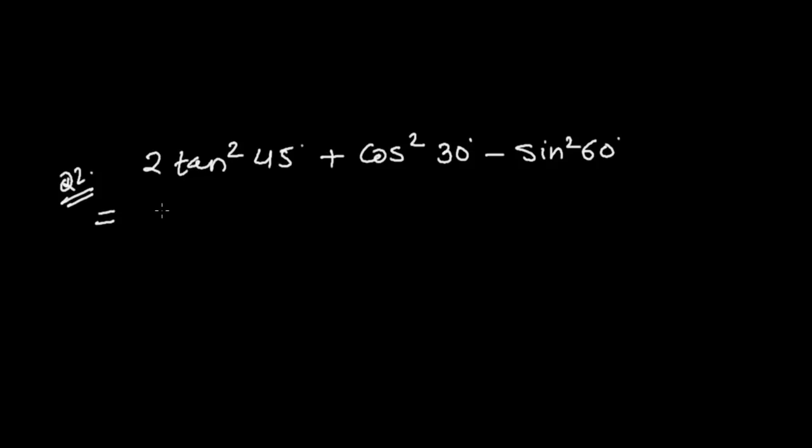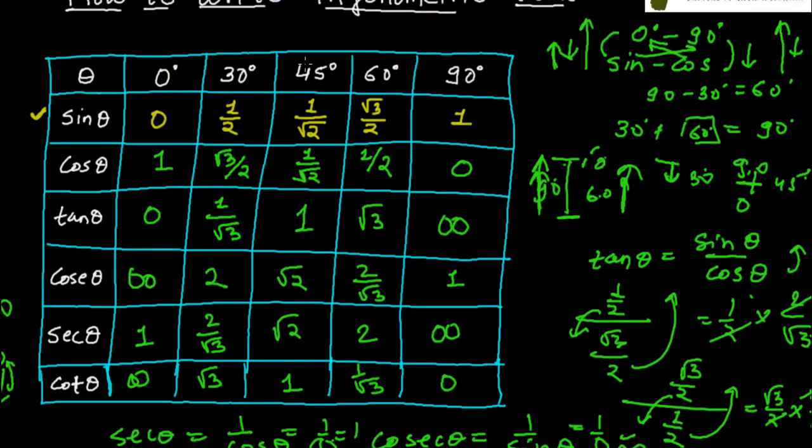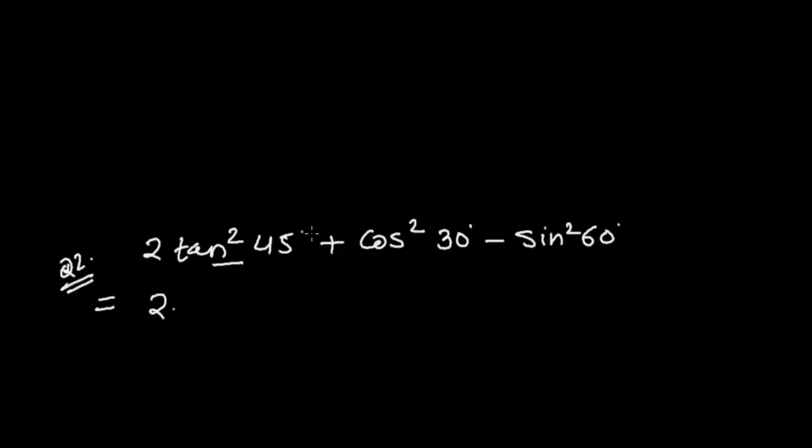So let me first write 2 times tan square 45. So let me find out the value of tan square 45. From this table, tan 45. So tan 45 that's 1. So it will be 1 squared.